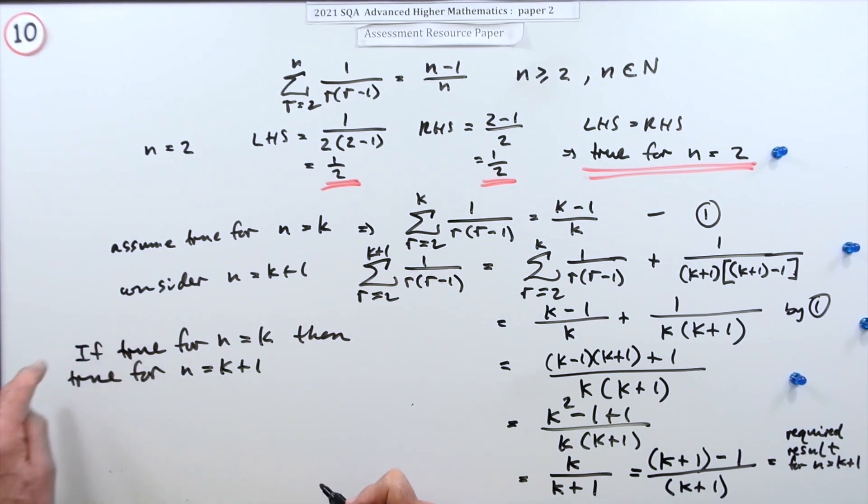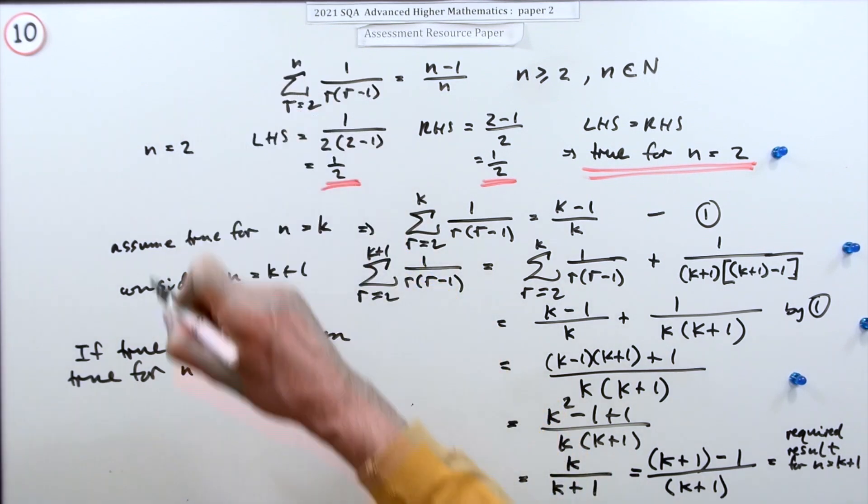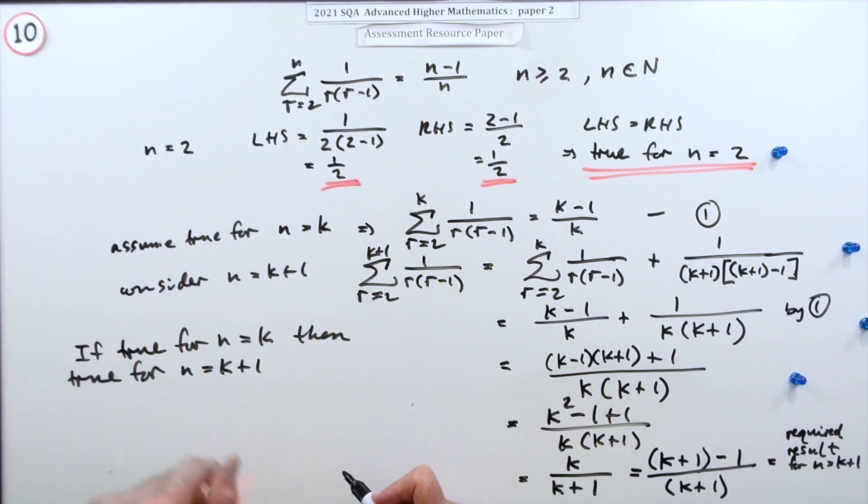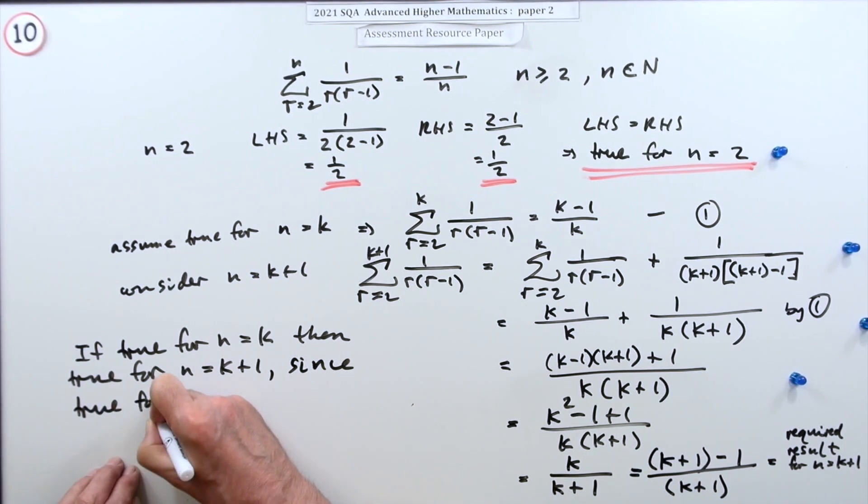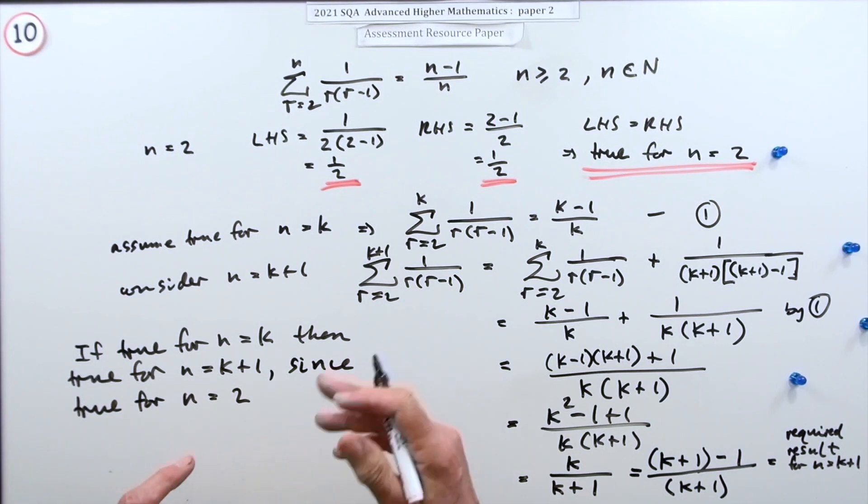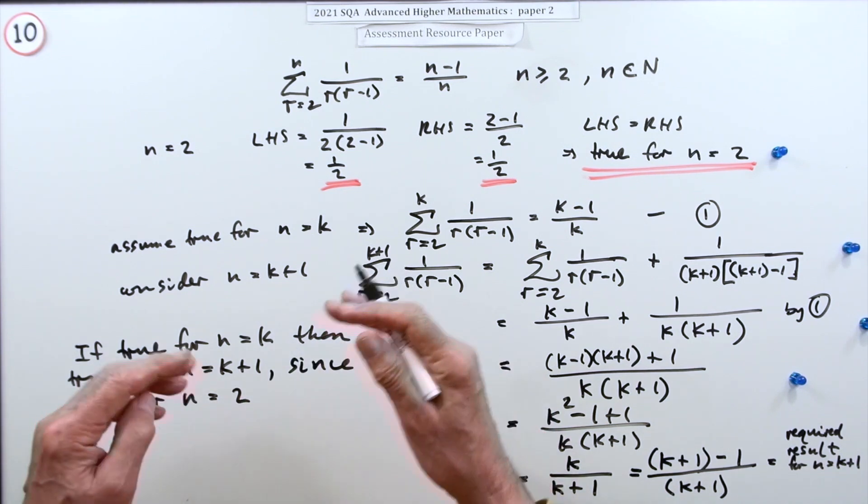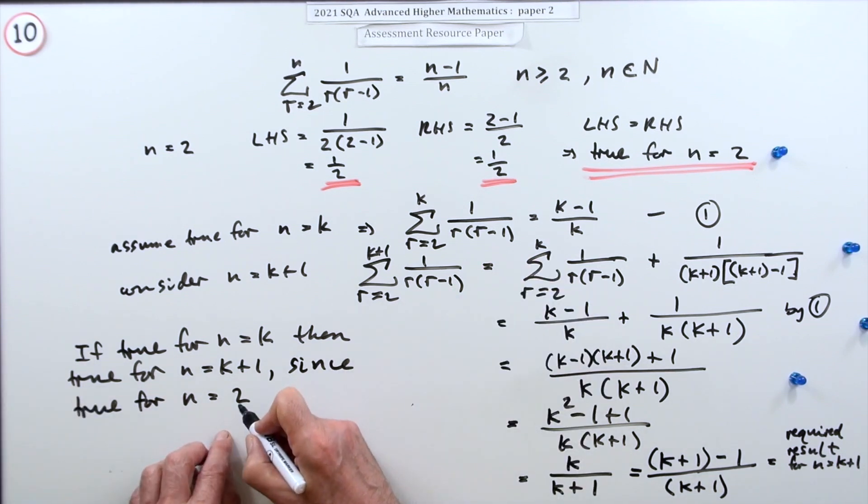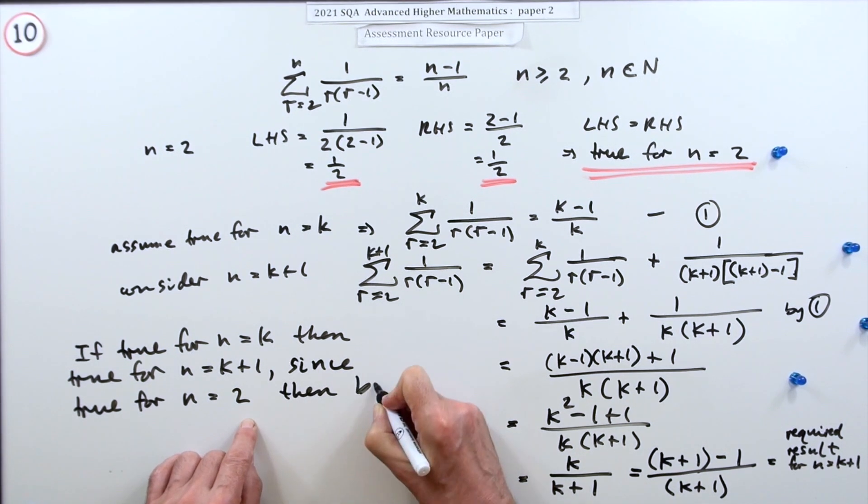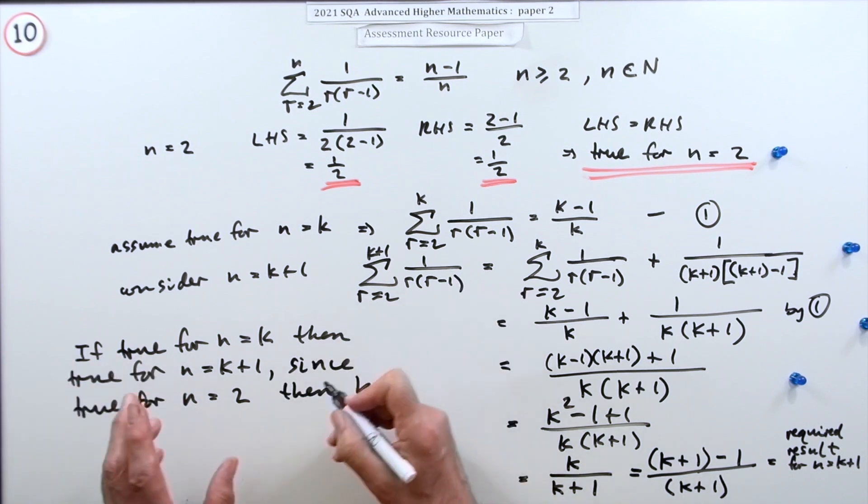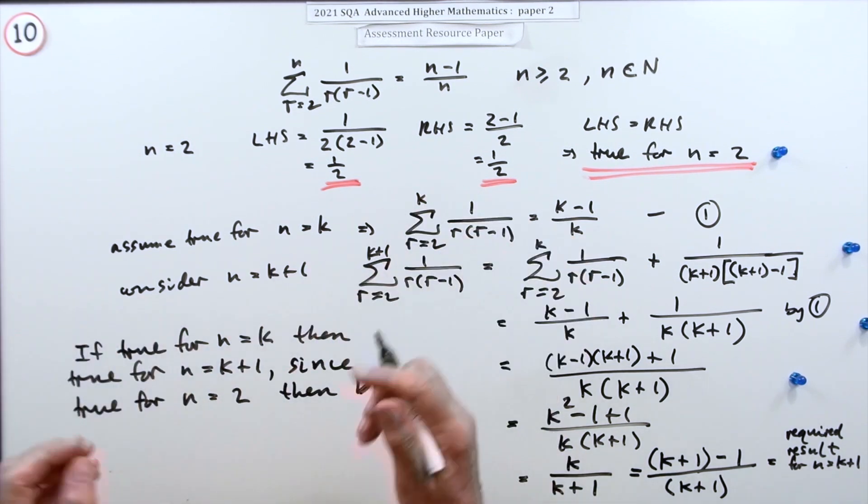Notice a little sort of subject's missing there - that's why you can sometimes just call that P for the proposition and say if P is true, then P is true for n equals k plus one. But since it's true, or P is true for n equals two, then by that inductive process - if it's true for two, this tells you it's true for three, and if it's true for three, this tells you it's true for four - by that inductive process, it's true for all n greater than or equal to two. Since it's true for n equals two, then by induction.